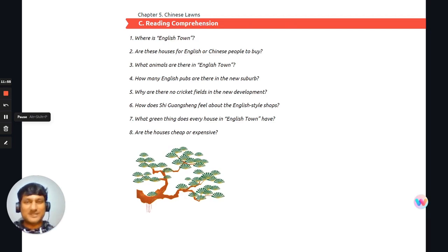Okay. I take it that you've paused the video and answered everything, and now I'm going to give you the answers. So where is English town? English town is in Shanghai. Are the houses for English or Chinese people to buy? They are for Chinese people to buy. What animals are there in English town? So the only thing they've mentioned are birds. They are pigeons.